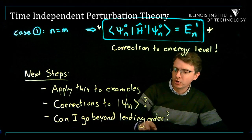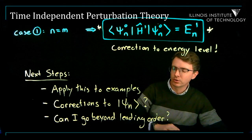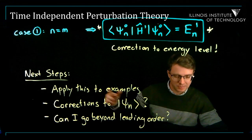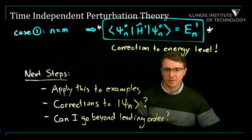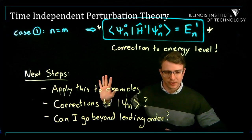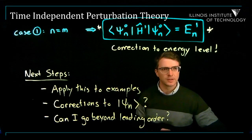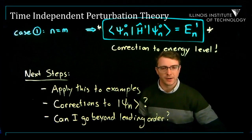I hope you're getting the main idea: you have a system which looks a lot like something you can solve exactly but with a tiny modification. We're figuring out what that modification does to the energy levels and to the energy eigenstates. We'll learn how to find corrections to the wave functions and how to systematically improve these approximations. Thanks for your attention. Bye for now.